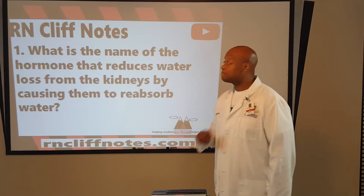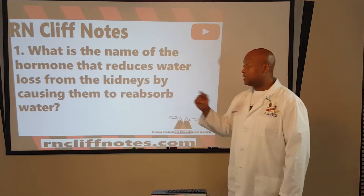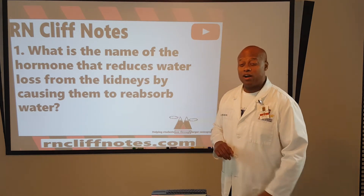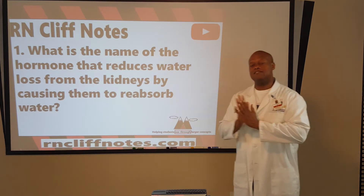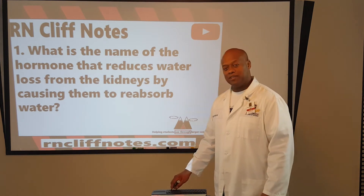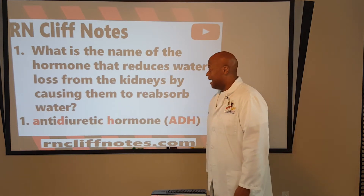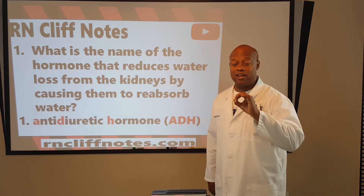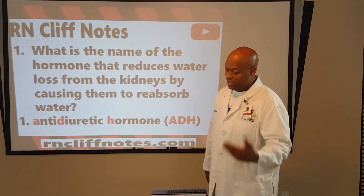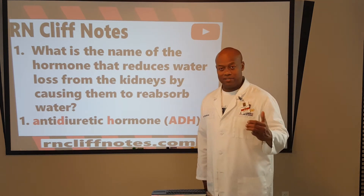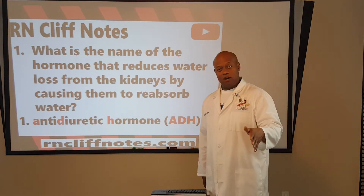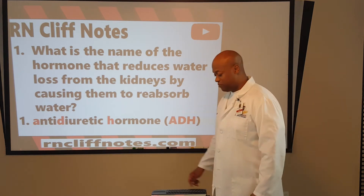Number one: What is the name of the hormone that reduces water loss from the kidneys by causing them to reabsorb water? You should have written down ADH — antidiuretic hormone. Diuresis means to let out urine, so anti-diuresis means to stop the release of urinary water. Super simple.